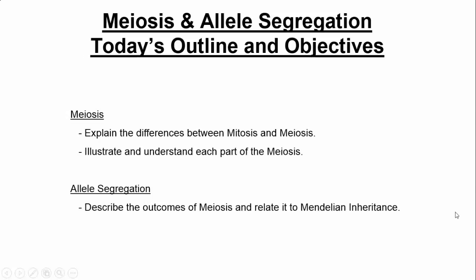In today's lecture, we're going to talk about meiosis and allele segregation. The first thing I want to walk you through is the differences between mitosis and meiosis, which we've talked about before. Then I'd like to illustrate each part of meiosis — understand at the superficial level how it's like mitosis, but then understand deep down how it's really not. It's a very different beast. The final thing I'd like to talk about is allele segregation and relate it to Mendelian inheritance.